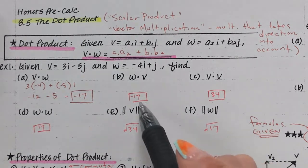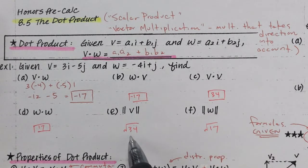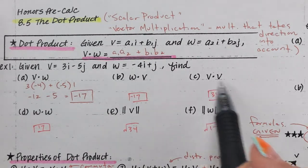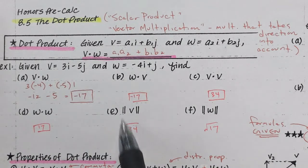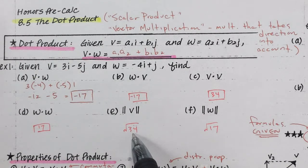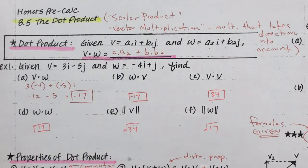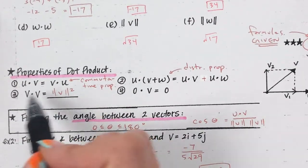When you have V times V, look here — you have the magnitude. Hopefully that makes sense, because what is V dot V? It's going to be that squared plus that squared. But what is magnitude? It's that squared plus that squared, and then square root. So V dot V is just the square root of the sum of squares squared — that's actually one of the properties we talk about next.